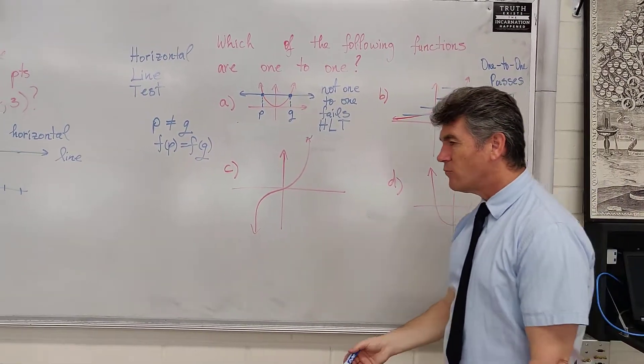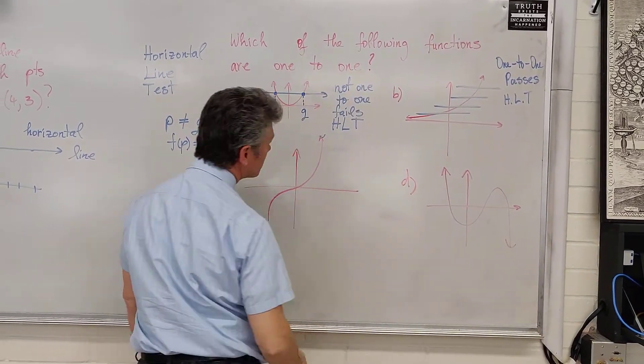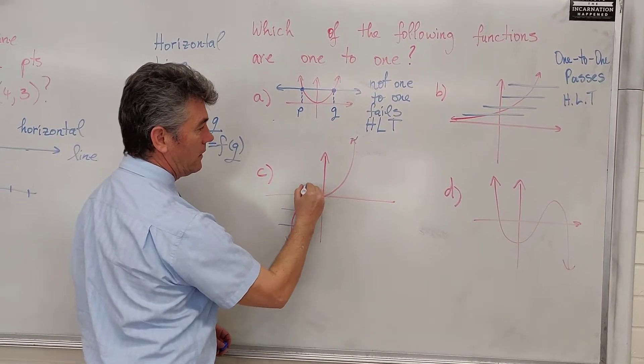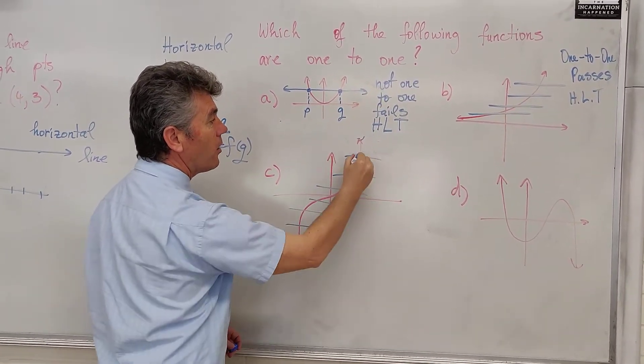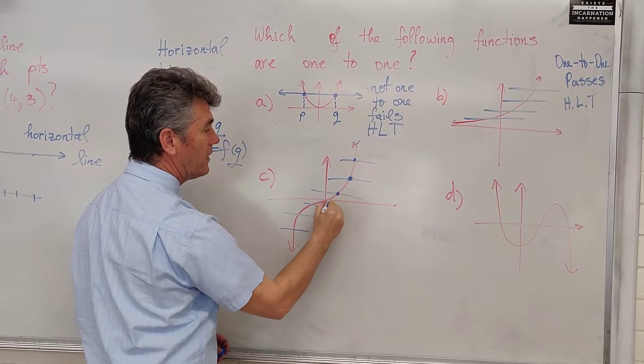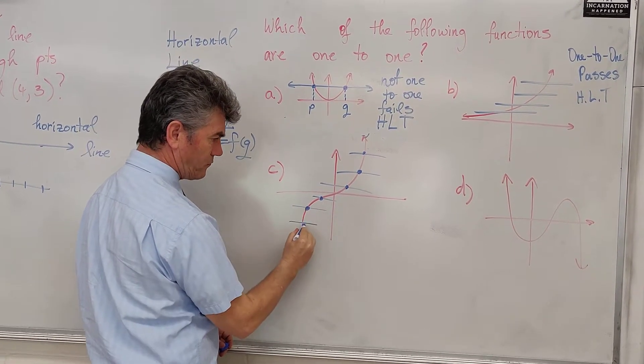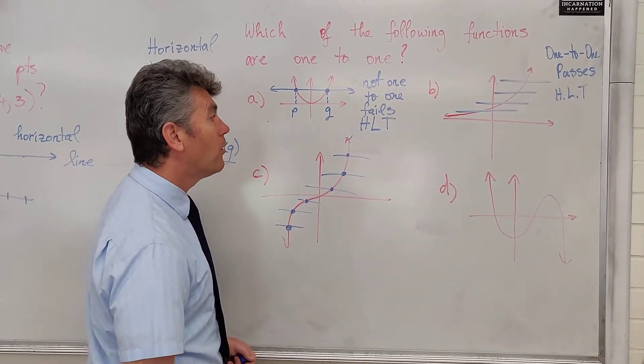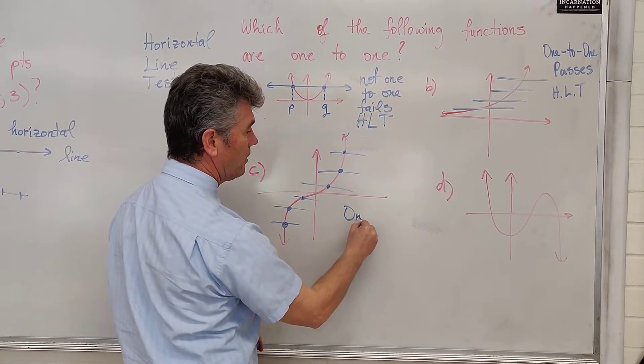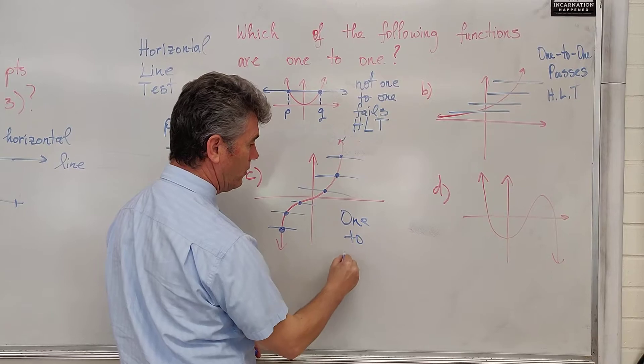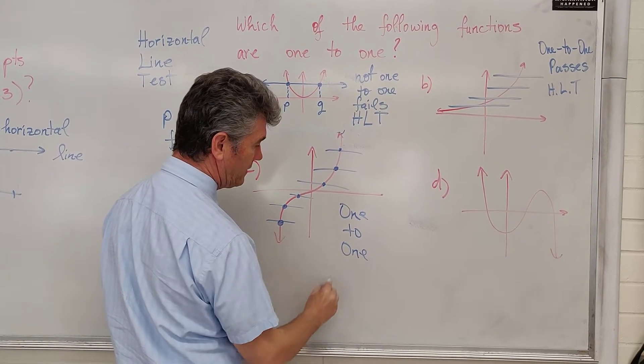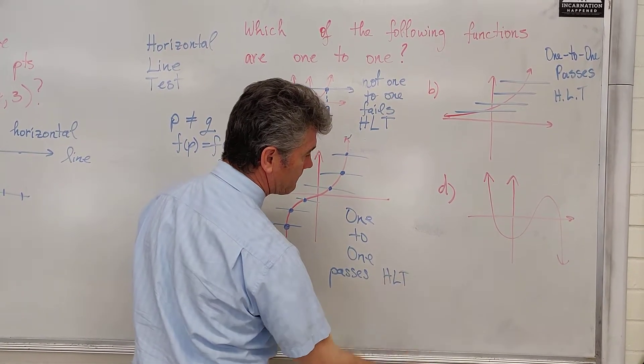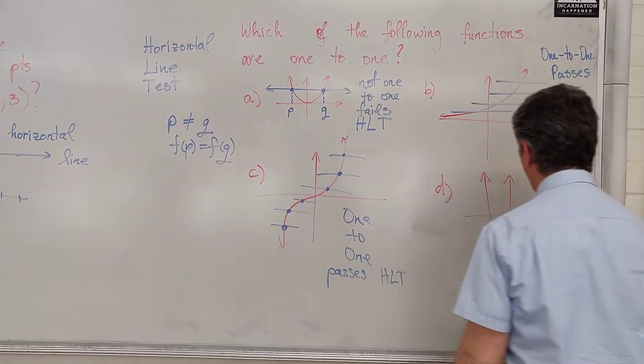Take a look at C. What do you think? Yes? No? Maybe? Take a look. Every single horizontal line only intersects the graph in one point. So, no two different points have the same y-coordinates. This is one-to-one. Same reason. Passes the horizontal line test.